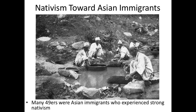Worth noting is that a lot of the 49ers were Asian immigrants — the majority from China — and they experienced very strong nativism. There was an idea among many Americans that this was 'white man's gold and silver,' and that the Chinese did not have the right to come and take what belonged to Americans. A lot of this gold and silver ultimately ended up in banks in San Francisco — that's why the NFL football team is known as the San Francisco 49ers, tying to the California Gold Rush.